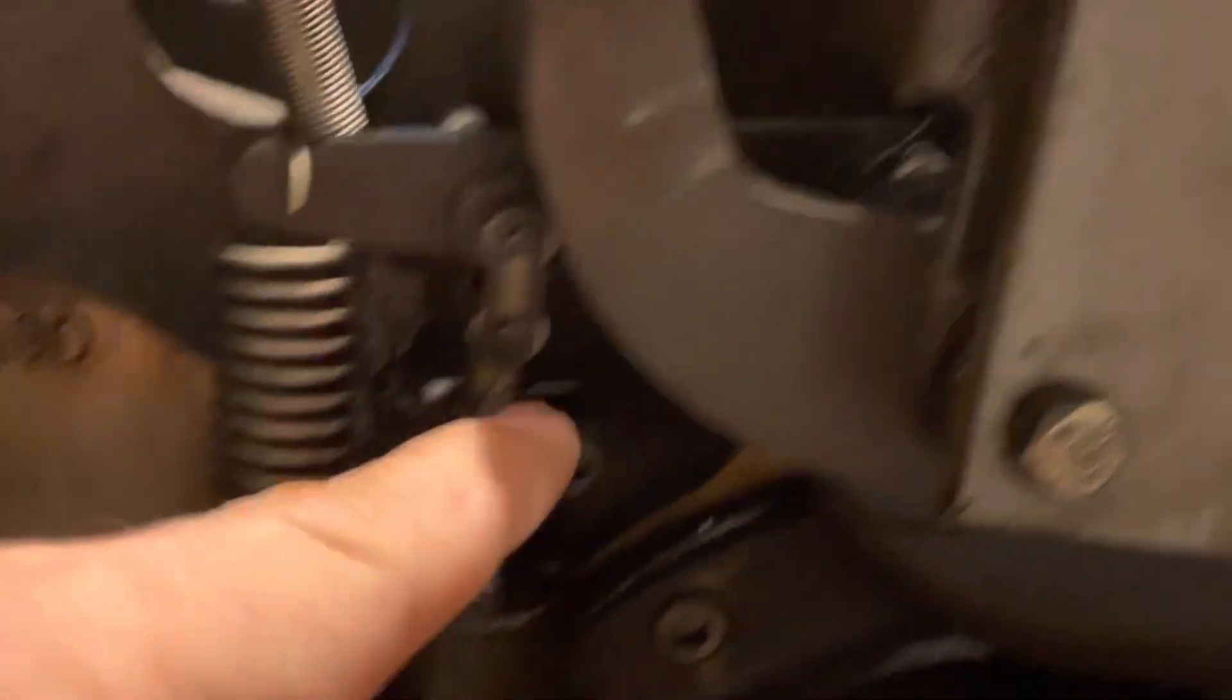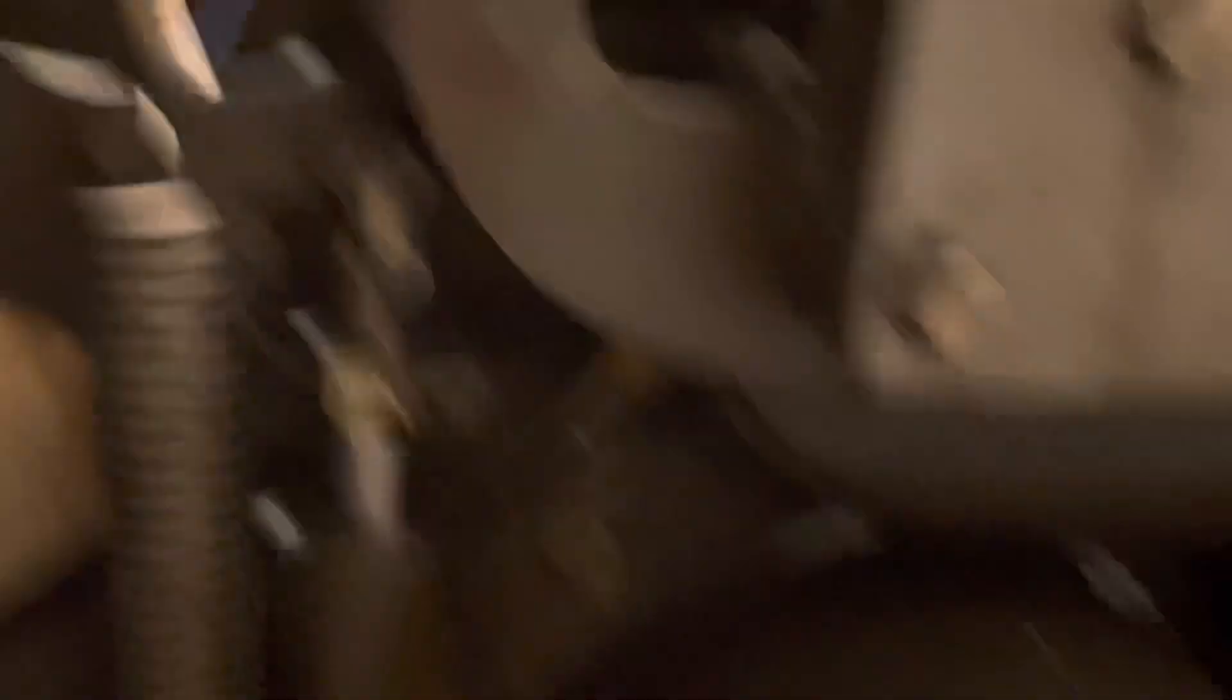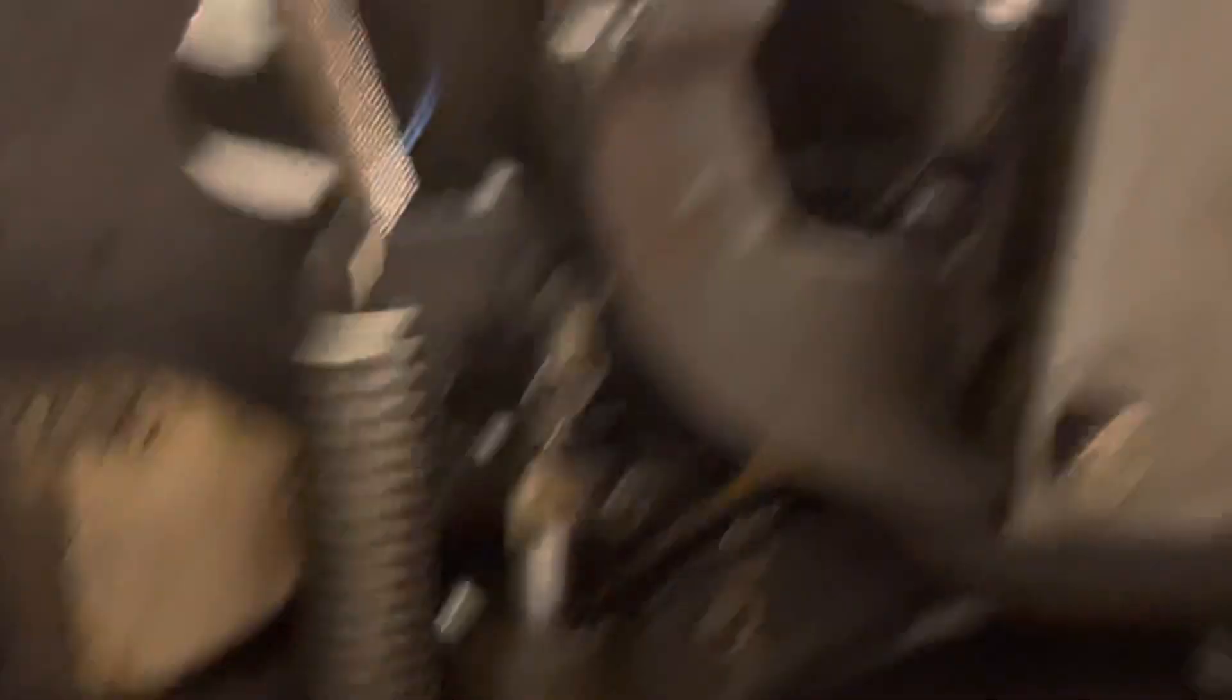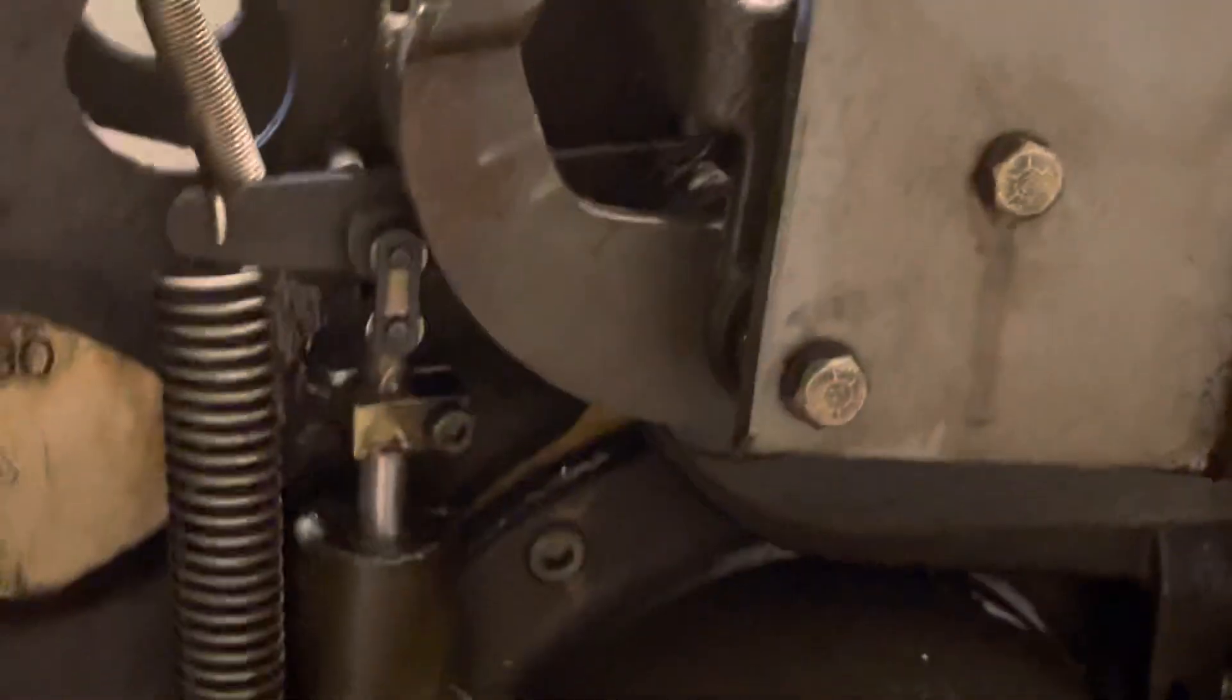When this drops down, there's a little arm back here that pushes the clutch arm out of the way and keeps it out of the way until it goes down and then allows the clutch arm to come back. Let me run it through the cycle and hopefully it'll make sense when you see it.